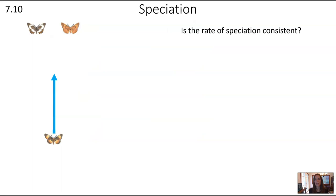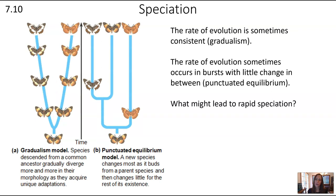Is the rate of speciation consistent over evolutionary time? There are two models: gradualism and punctuated equilibrium. Gradualism holds that yes, it's fairly consistent — species descend from a common ancestor and gradually diverge. Punctuated equilibrium says there are fits and spurts where things stay the same and then a big event causes a big change. As is often true, both happen — the rate of evolution is sometimes consistent (gradualism) and sometimes occurs in bursts (punctuated equilibrium).